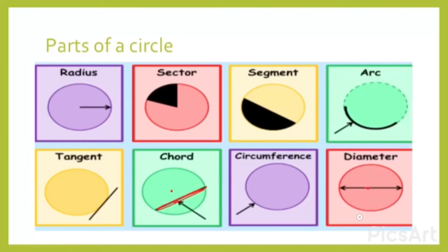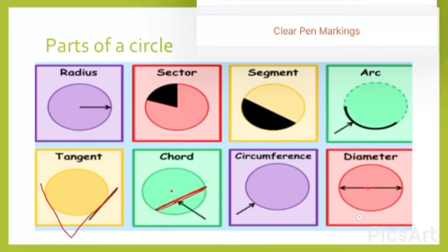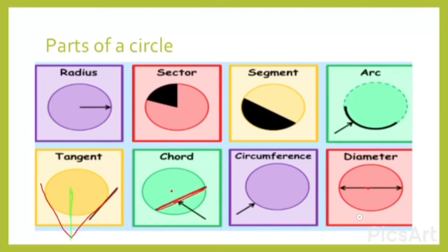Next comes the tangent. There are only two tangents of a circle. A tangent is a line that only touches the circumference of the circle. The reason there are only two tangents is that if you try to bring a tangent line to another position, it would go into the circle, which we don't want. So there is one tangent touching the left side of the circumference and one on the right.